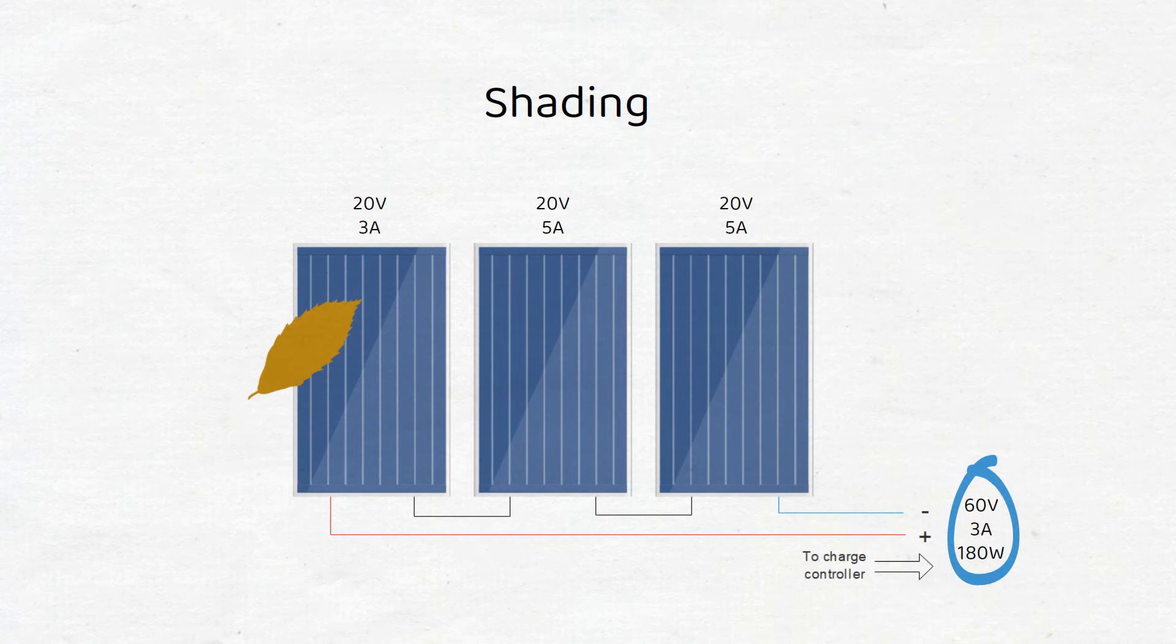In a series connection, the panel with the lowest amount of output current will be the current for all panels. The one panel will literally drag down the current of the other panels. This is why different models of panels should never be connected together, since this will limit the current, voltage and power of the module.